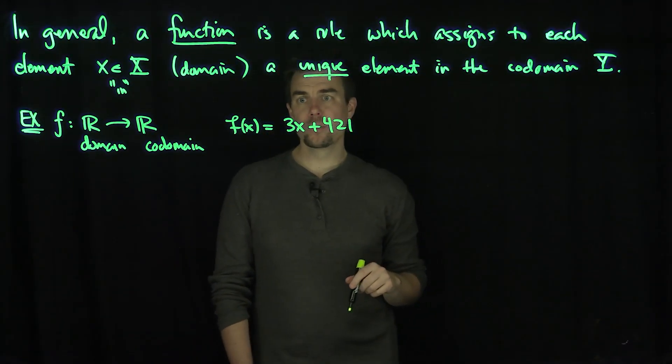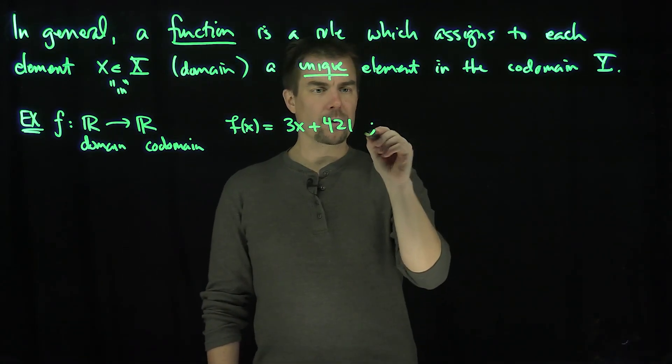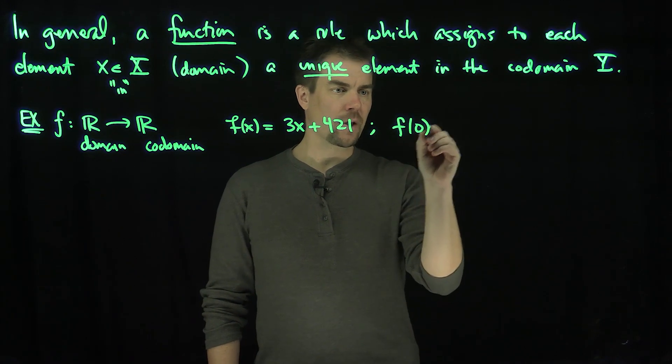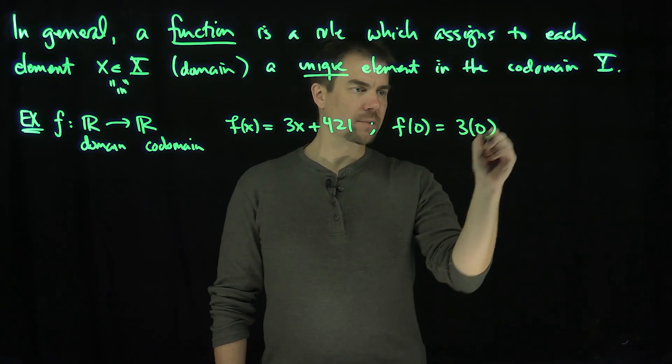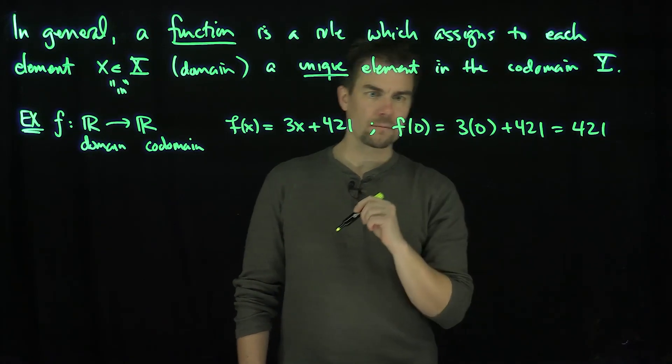So what I'm going to do is I'm going to input a real number, I'm going to output a real number, 3x plus 421. So for example, if we were to plug in zero to this function, that would be 3 times 0 plus 421, which would be 421.